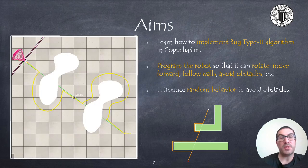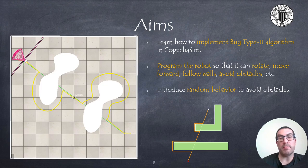The aim of this presentation is to learn how to implement Bug Type 2 algorithm. This algorithm was already explained in a previous video. It allows you to compute proper robot movements to avoid obstacles, behaving as if the robot were back, as shown in the figure.